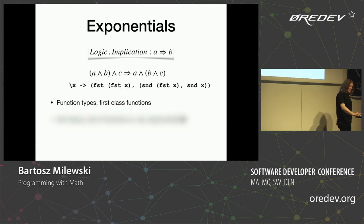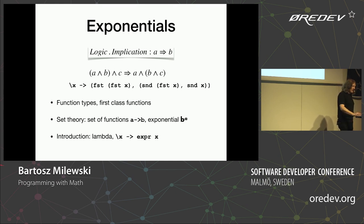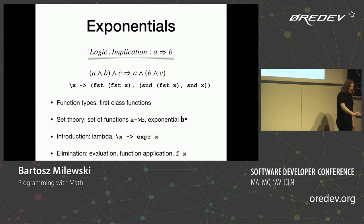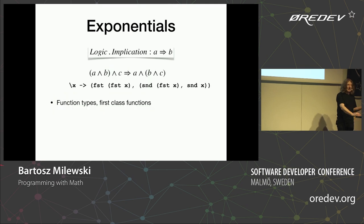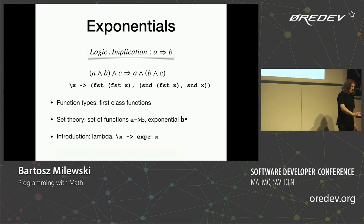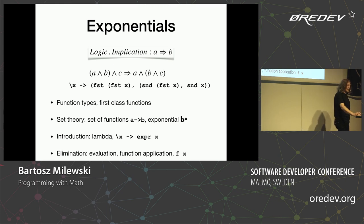In set theory, we have a set of functions between two sets. The introduction of function types is through a lambda — you now have lambda in almost every language. The elimination is by applying the function: you provide the argument, which is like providing a proof of A, and you get a value of type B, which is a proof of B. Function application is very simple in Haskell.